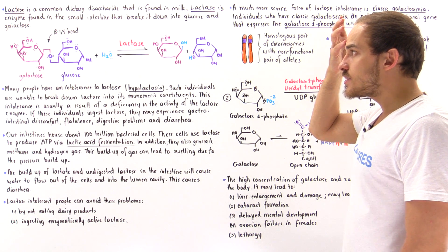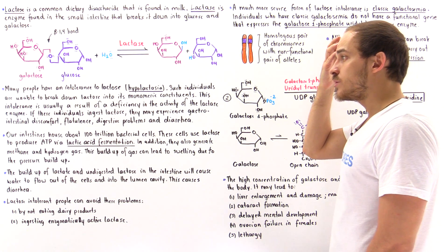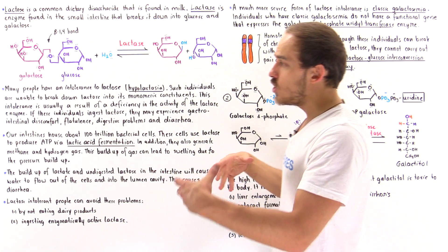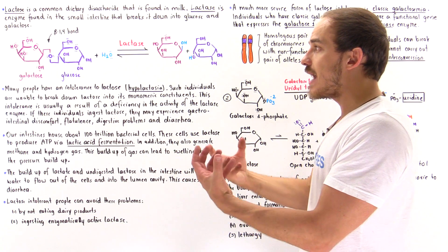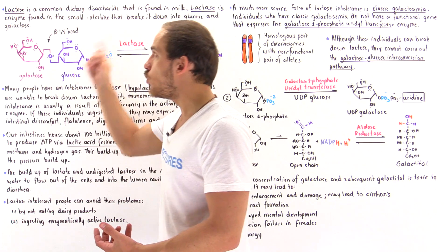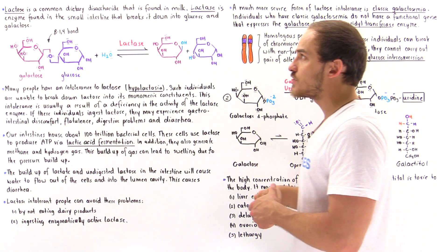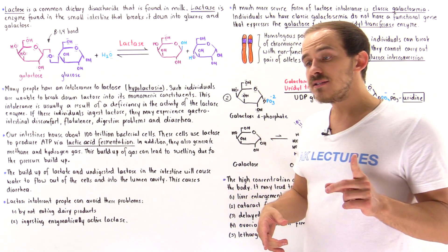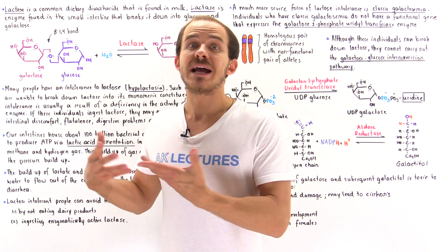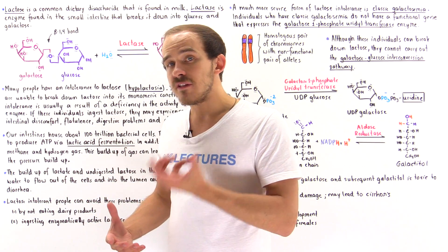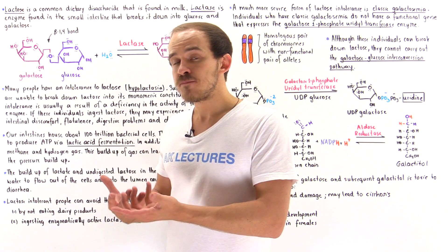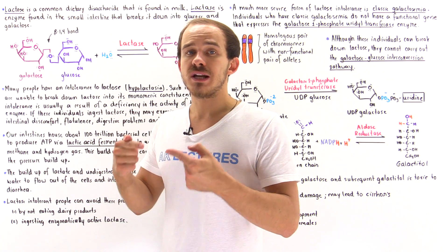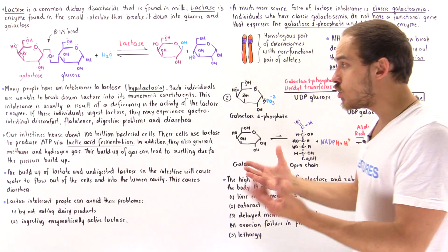These bacterial cells, just like any other cells in nature, need ATP molecules to survive, and they use lactic acid fermentation. When there is a buildup of lactose inside our colon, the bacterial cells will use that lactose and break it down to form ATP molecules. In the process, they form lactate — lactic acid. A buildup of lactic acid in our colon causes water to move out of the cells and into the lumen of the colon, leading to watery stool and diarrhea.